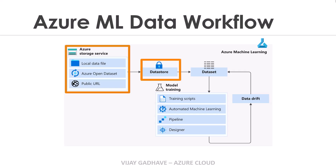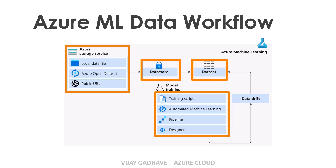After that, we have to create the data store. The data store will have the connection information of our Azure storage service. After creating the storage service and data store, we have to create the data set. Note an important point here: after creating a data set with the help of a data store, data will remain at its existing location. We are not moving or copying any data to create a data set.